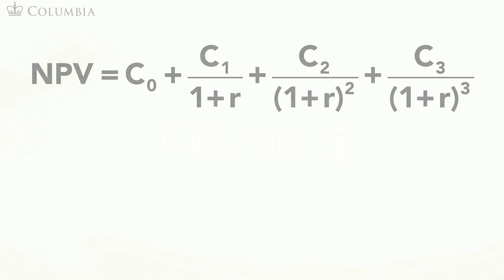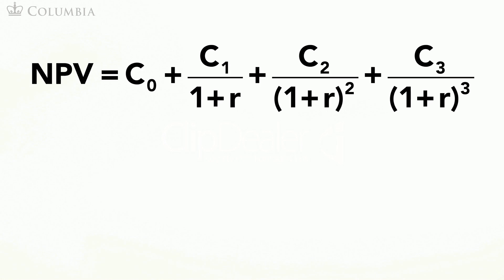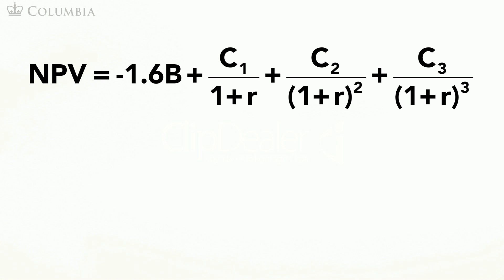Let's go back to the acquisition example and assume that the price the current owner of the firm is willing to sell for is $1.6 billion. What is the NPV of buying this firm? The cash flows in years 1, 2, and 3 are the same as before, but in the NPV formula we now need to include the cash flow in year 0, which in this case is minus $1.6 billion — the amount we pay.